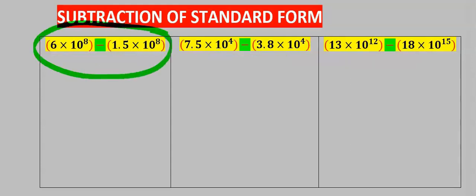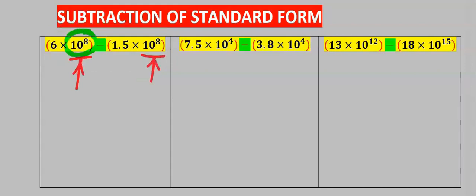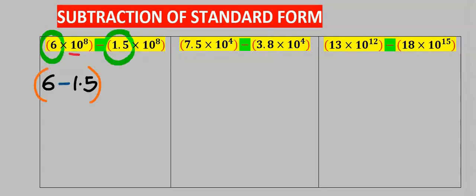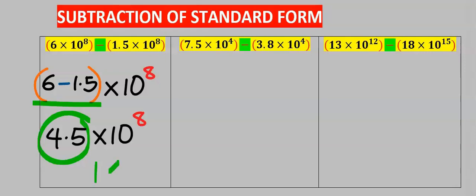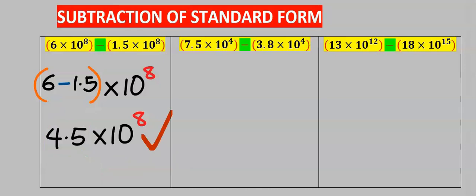To solve this first subtraction problem, check if the powers of the tens are the same. Since they are the same, we subtract: 6 minus 1.5. Since the powers are the same, I will multiply this by 10 to the power of 8. 6 minus 1.5 equals 4.5, and 4.5 is between 1 and 10, so this is our answer.